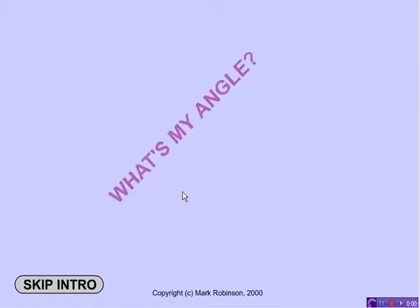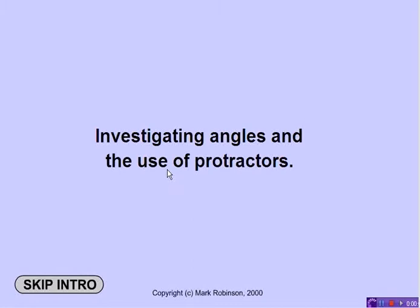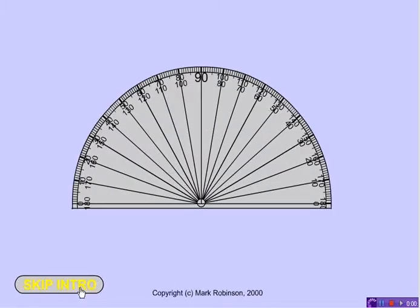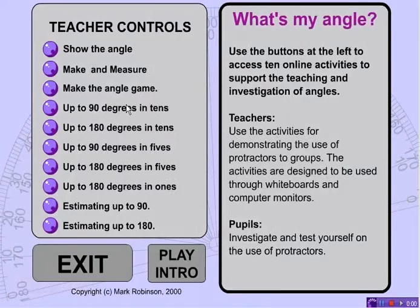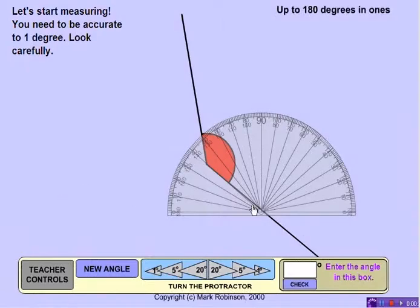All right, this is the website that you're going to come to when you click on assignment 6.2. We've already been to this website in assignment 6.1, so we can skip the intro. The assignment is going to come here from this up to 180 degrees in ones. That is the lesson that we're going to be going through.